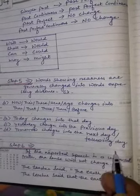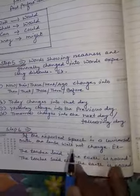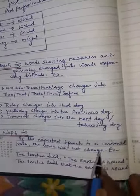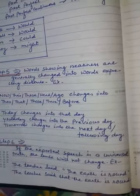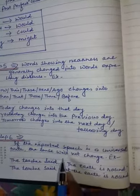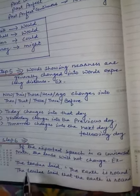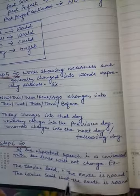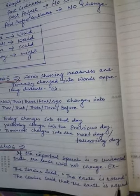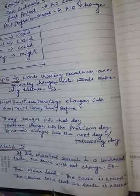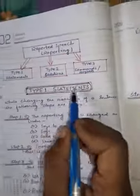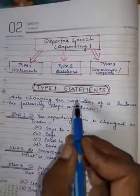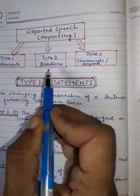The last step: if the Reported Speech is a universal truth, the tense will not change. If the statement contains a universal truth, no change will be made — just remove the comma and add 'that.' For example: 'The teacher said, the earth is round' becomes 'The teacher said that the earth is round.' So this is Type 1 — the Statement. In my next class, I will explain about Type 2 — the Question. Thank you.